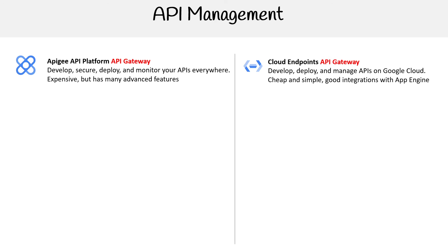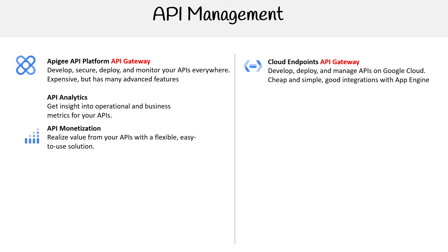Let's look at what Apigee does, because it does a ton. We have API analytics, API monetization — where people can actually pay to access particular resources via the API — and Apigee Sense, which adds intelligent behavior detection to protect APIs from attack.